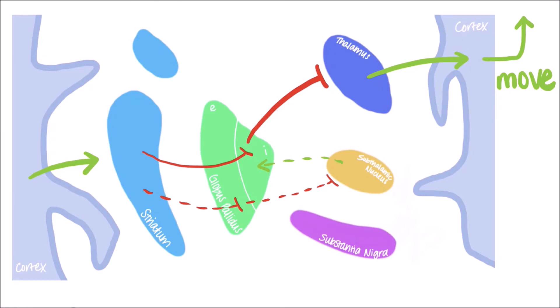In addition to this, there is also dopamine that is released from the substantia nigra, which works to both promote the direct pathway and inhibit the indirect pathway through projections to the striatum. As a result, dopamine stimulates movement overall.